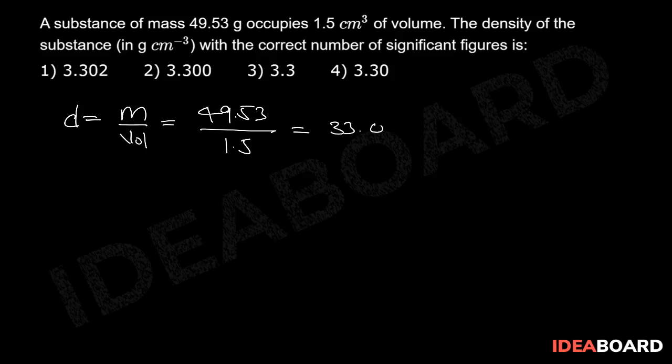Now, according to the multiplication and division rule of significant figures, the solution should contain the same number of significant figures as the number with the least number of significant figures. The mass of the body, 49.53 grams, is given with four significant figures, and volume, 1.5 cm³, with two significant figures. So the final solution should contain two significant figures.